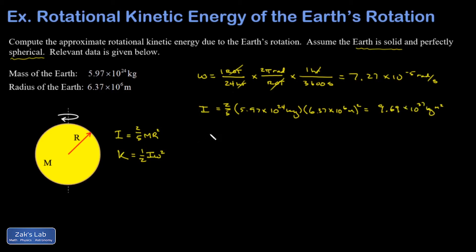Finally, we can write down the kinetic energy of the spin of the Earth. That's one-half times I times omega squared. And I end up with 2.56 times 10 to the 29 joules.